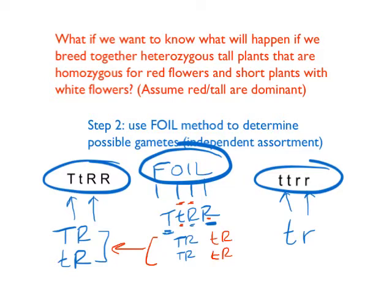Over on the right side with our small white plant, it's also going to pass on one T and one R. There are still four pairs using FOIL: first is little t, little r; outside is little t, little r; inside is little t, little r; and last is little t, little r. So we still have four different possibilities, but they're all the same: little t, little r. Those are the four possible types of gametes this parent can produce. Gametes are eggs and sperm.